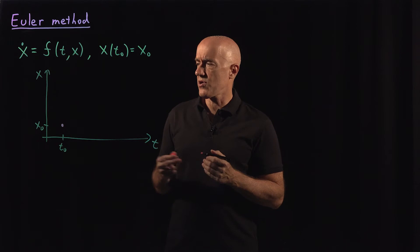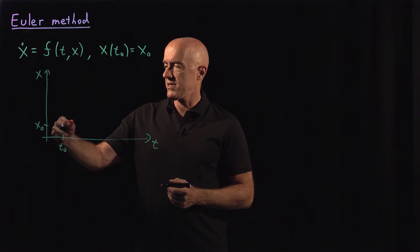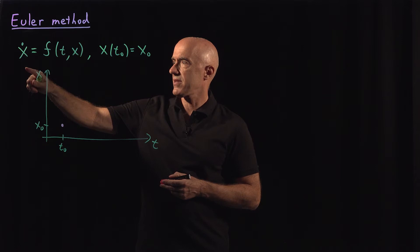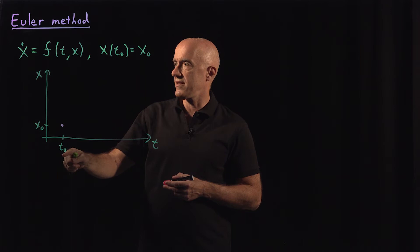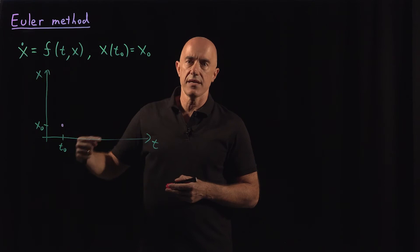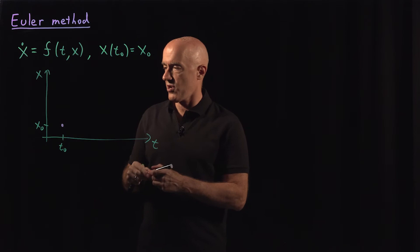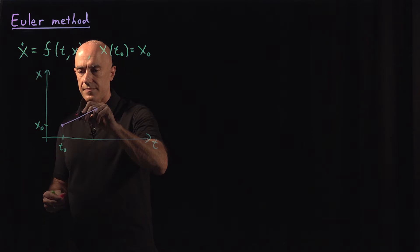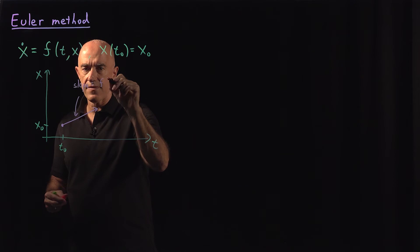The goal of the numerical method is to march this solution forward in time from its initial value. To do that we need to make use of the differential equation. So the differential equation tells us dx/dt is this function here evaluated at t equals t naught and x equals x naught. The dx/dt is the slope of the tangent line to the solution curve, so I can draw that. So let's say x dot is positive. So the tangent line to the solution curve can look like that.